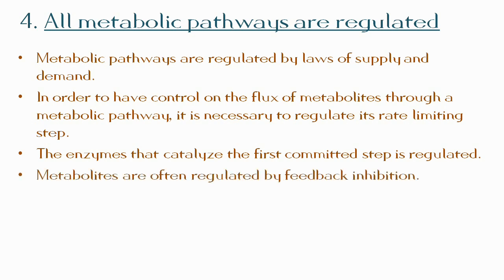Metabolites are often regulated by feedback inhibition. For example, substance A is getting converted into B, to C, and ultimately the final product D is formed. If the concentration of D goes very high, it will inhibit the first reaction and the reaction will ultimately stop. This is feedback inhibition.